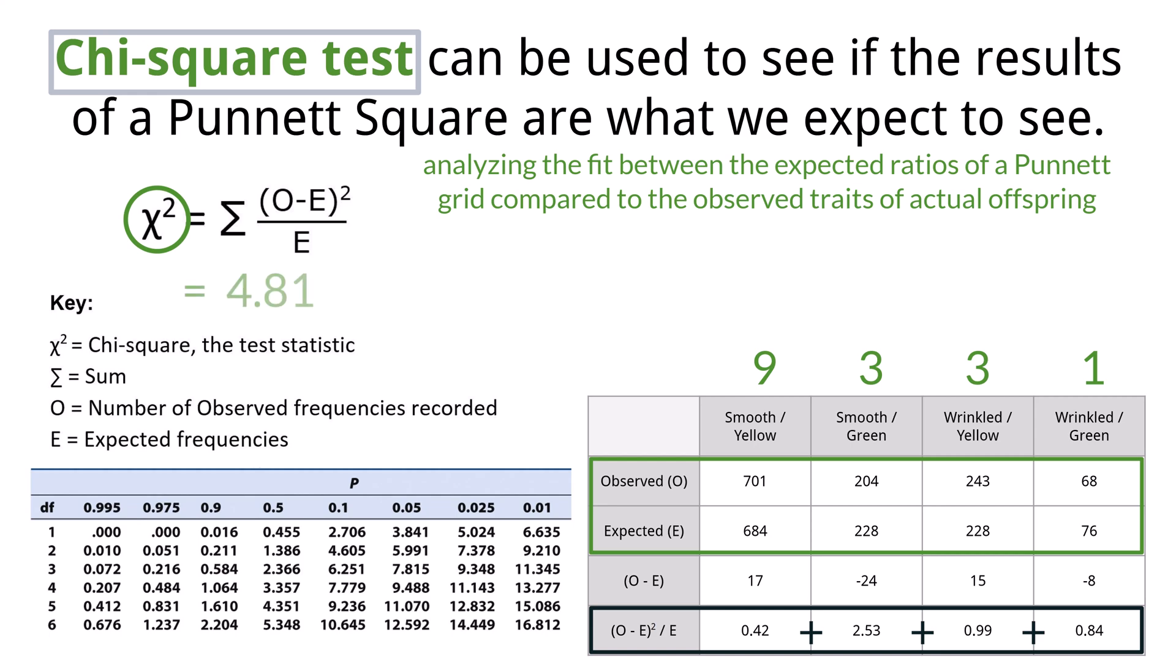In this case, it is 4.81. You must then look at the chi-square chart to see if your number is different enough from the expected that you cannot say the offspring follow the ratios expected, or is your number not different enough and you can say that there is no significant difference between the observed and the expected, which means the results do follow the ratios expected.